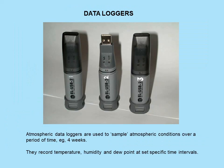Finally, we have atmospheric data loggers, used to sample atmospheric conditions over a period of time — e.g. four weeks or more — and they can monitor for over a year depending on the time interval. The beauty of a data logger is that atmospheric conditions in a building can change very rapidly during the day and night. If one does a snapshot survey, conditions can be totally different just half an hour later — that is the advantage of data loggers. These data loggers record temperature, humidity, and dewpoint at set specific time intervals, and these can be used to calculate other factors.